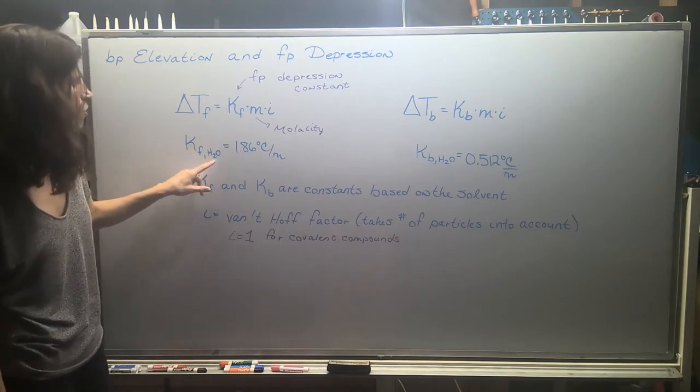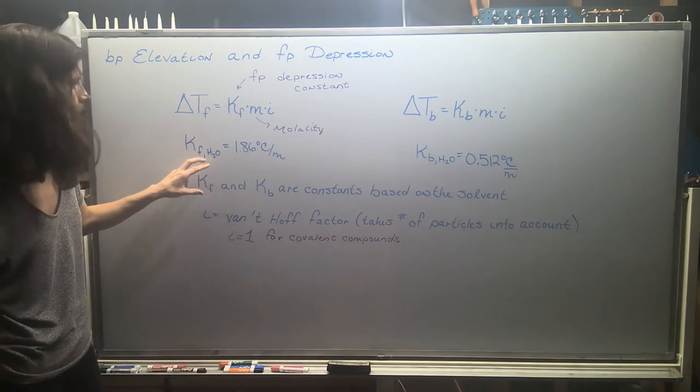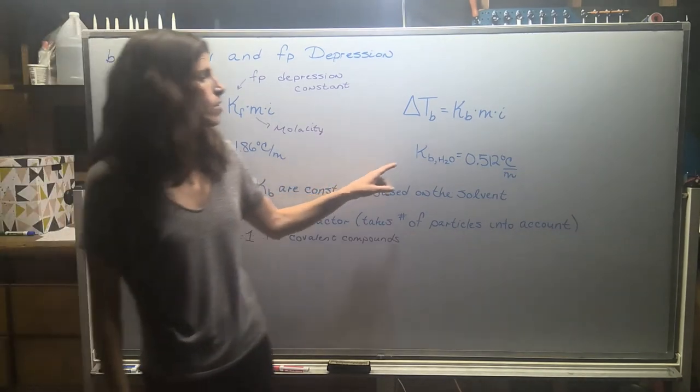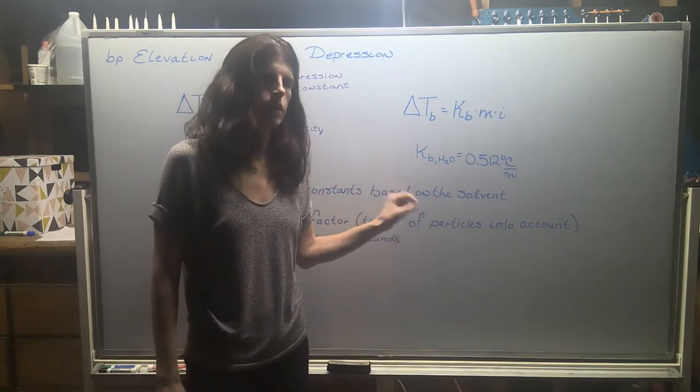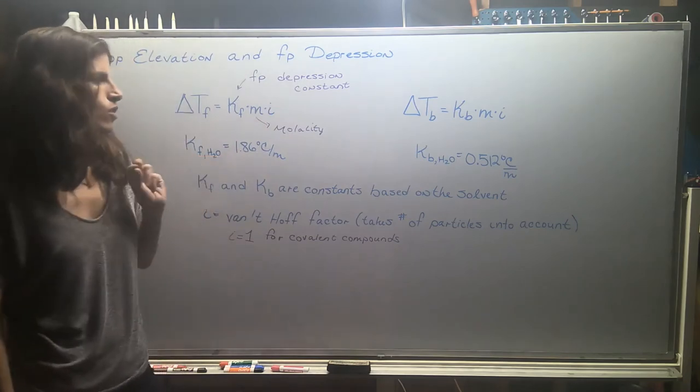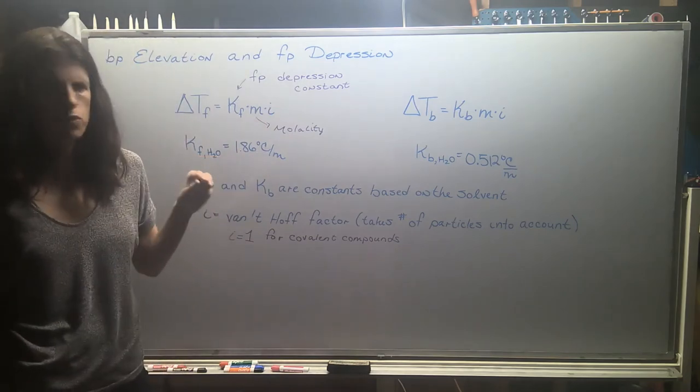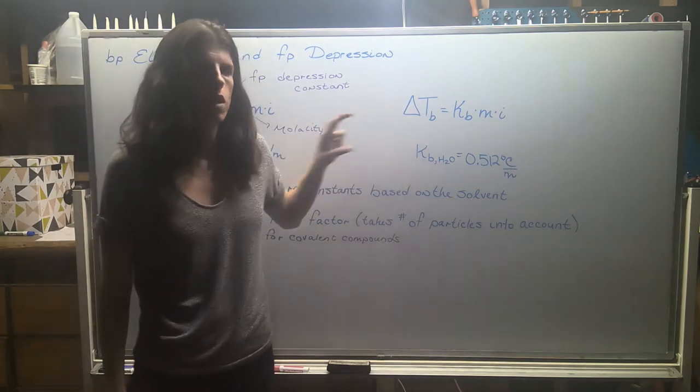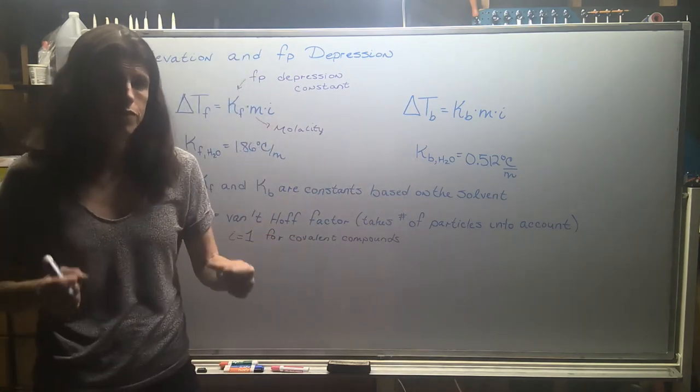The other thing to take note of, the two equations look super similar. However, the freezing point depression constant for any substance, here I gave you water because that's probably the most common, is going to be different than the boiling point elevation constant. So these two values are not the same. Sometimes students try to use 1.86 for their boiling point elevation constant. I just wanted to point out that they are different constants.